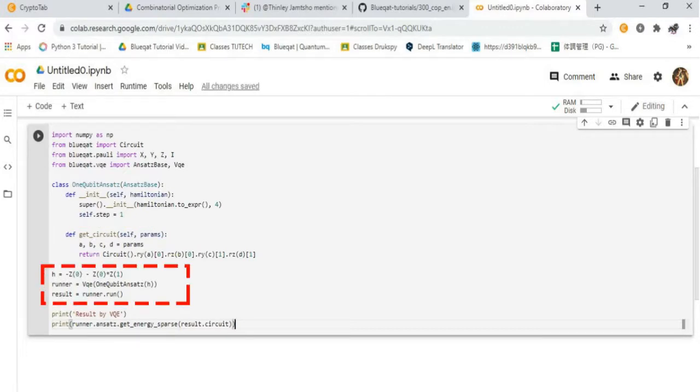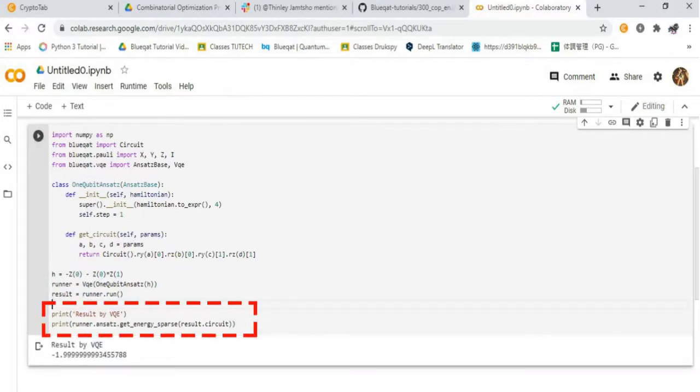Then, defining the Hamiltonian circuit and compiling with VQE to get the desired expectation value. Then, finally printing the desired result. Now we get negative 2 as the expectation value of minimum value.